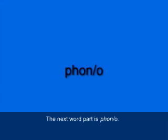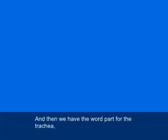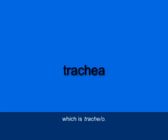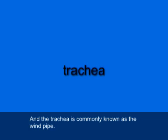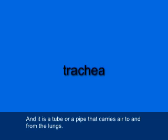The next word part is phono — P-H-O-N slash O — and that refers to the voice. Then we have the word part for the trachea, which is tracheo — T-R-A-C-H-E slash O. The trachea is commonly known as the windpipe, and it is a tube or pipe that carries air to and from the lungs. That covers the upper respiratory tract; now let's look at the lower respiratory tract.